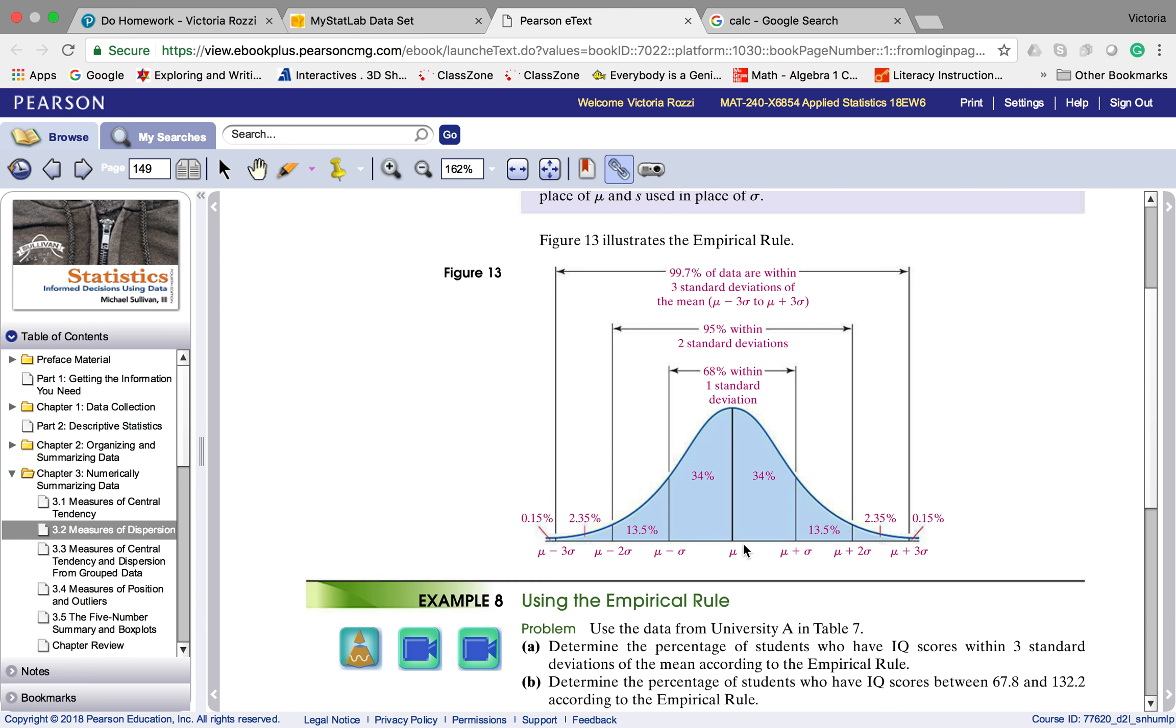Going the opposite direction, again, starting at 0.84, which is going to be in the middle. If I subtract 0.07, I'm going to get 0.77. If I subtract 0.07 again, I'm going to get 0.70. And if I subtract 0.07 again, I'm going to get 0.63.